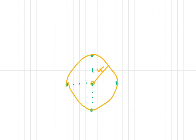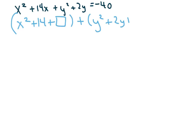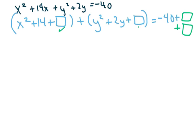Now let's just practice completing the square. Here we have another one and I'll go a little faster. I'm going to group my x's together — they're already kind of together here — and put my box. Box equals negative 40 plus, and I added two boxes on this side so I add two more here. I complete the square: half of 14 is 7, 7 squared is 49, so I put 49 on both sides. For the y portion, half of 2 is 1, and 1 squared is 1.